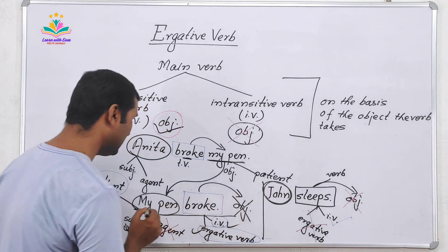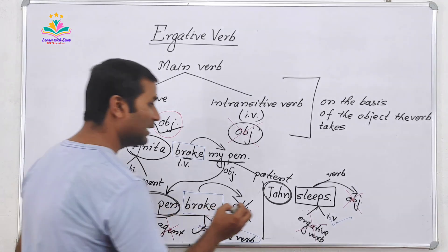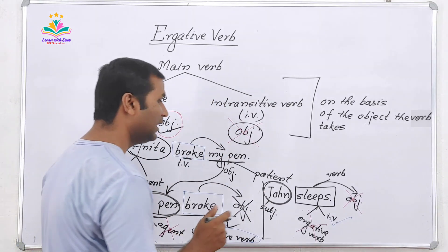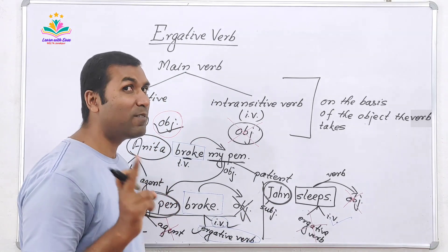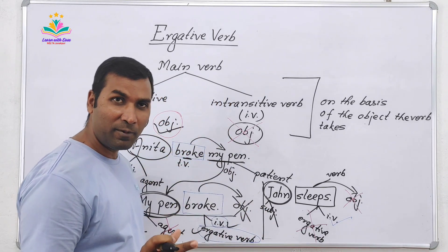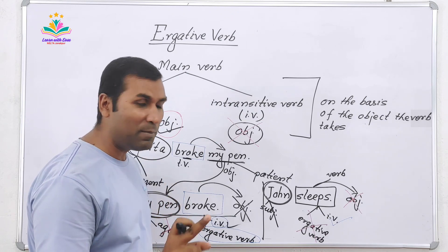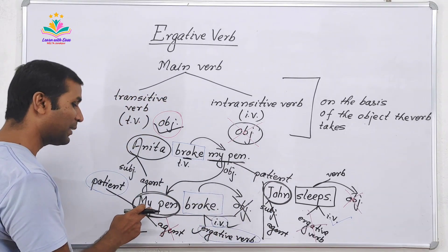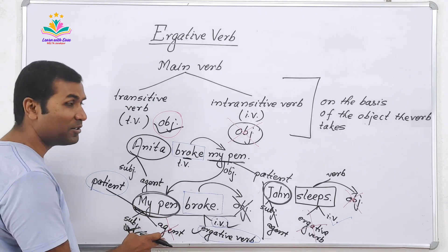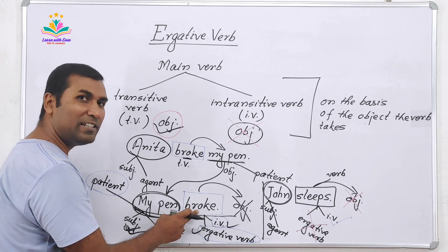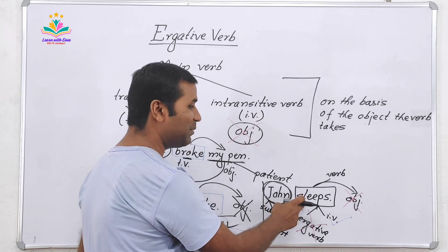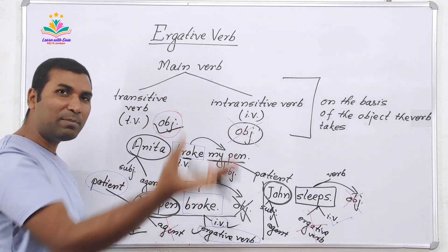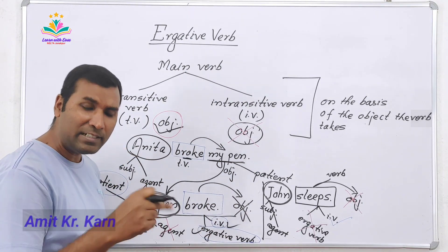In this sentence, 'John slips' — what is the subject? John is the subject. And who has performed this action? John has performed this action. So the performer is an agent. John is a subject and John is an agent. Now here, 'my pen broke' — 'my pen' is a subject, but is it an agent? No. Therefore, though it is like intransitive, it can also be called ergative. Because its subject is not an agent — its subject is a patient. Somebody else is there that breaks the pen — the pain itself doesn't break, somebody causes it.